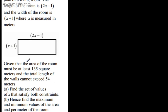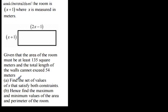Given that the area of the room must be at least 135 square meters and the total length of the walls cannot exceed 54 meters, in part A, find the set of values of x that satisfy both constraints.